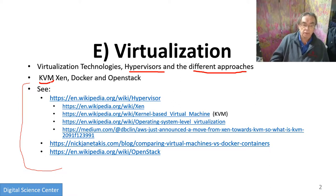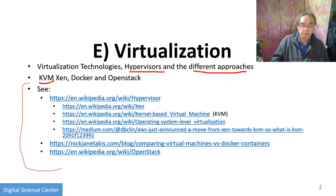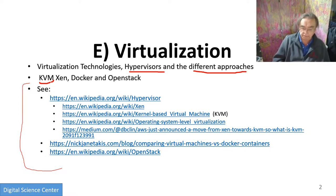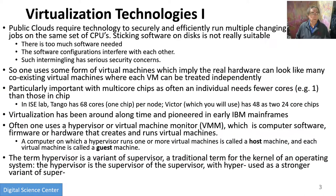KVM is a hypervisor and Docker and OpenStack are the managers above it. Docker can be above KVM and Xen, but it can also be standalone as a container technology.